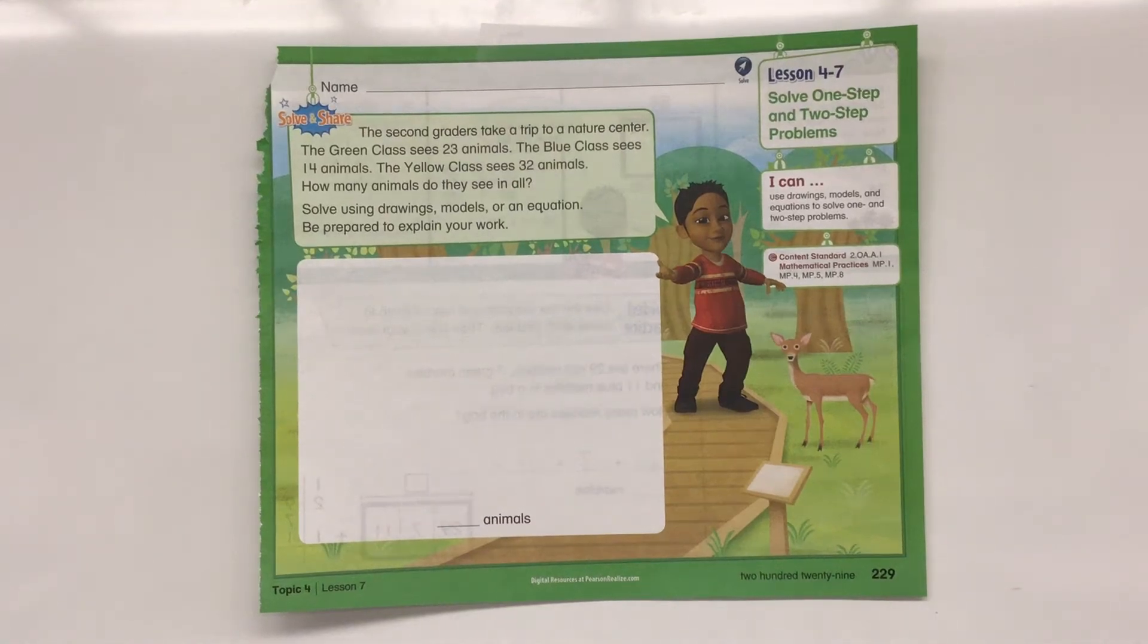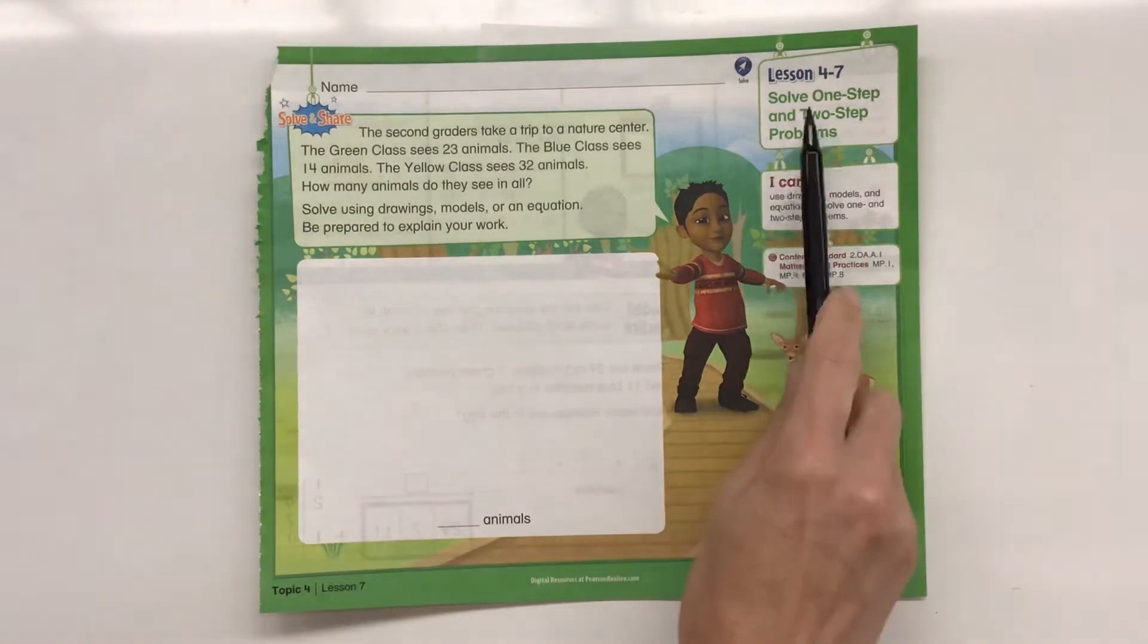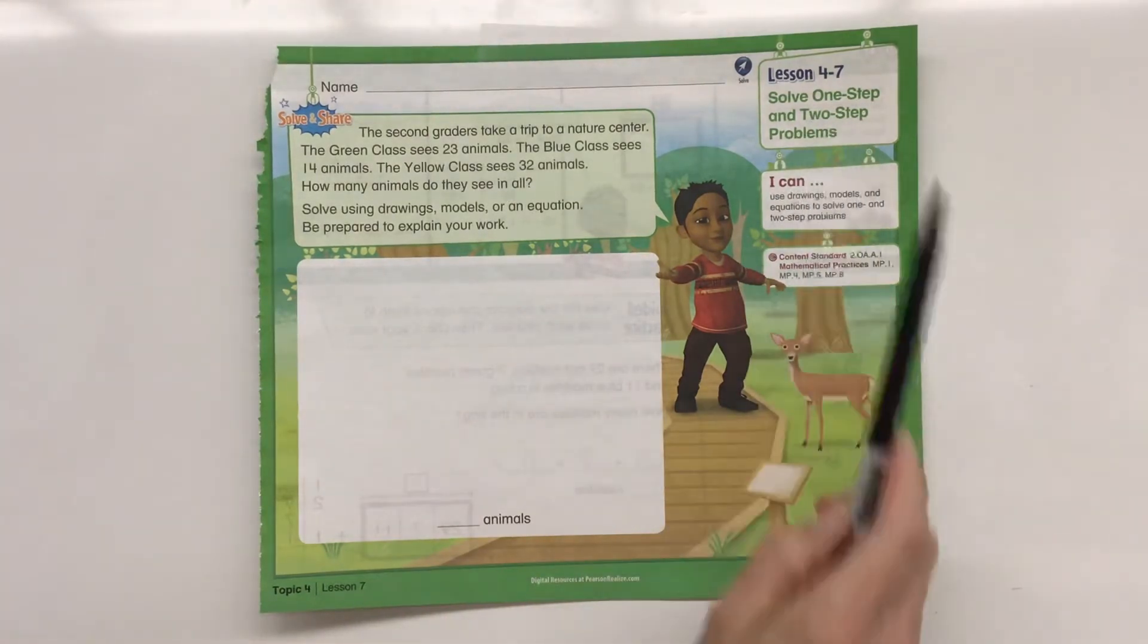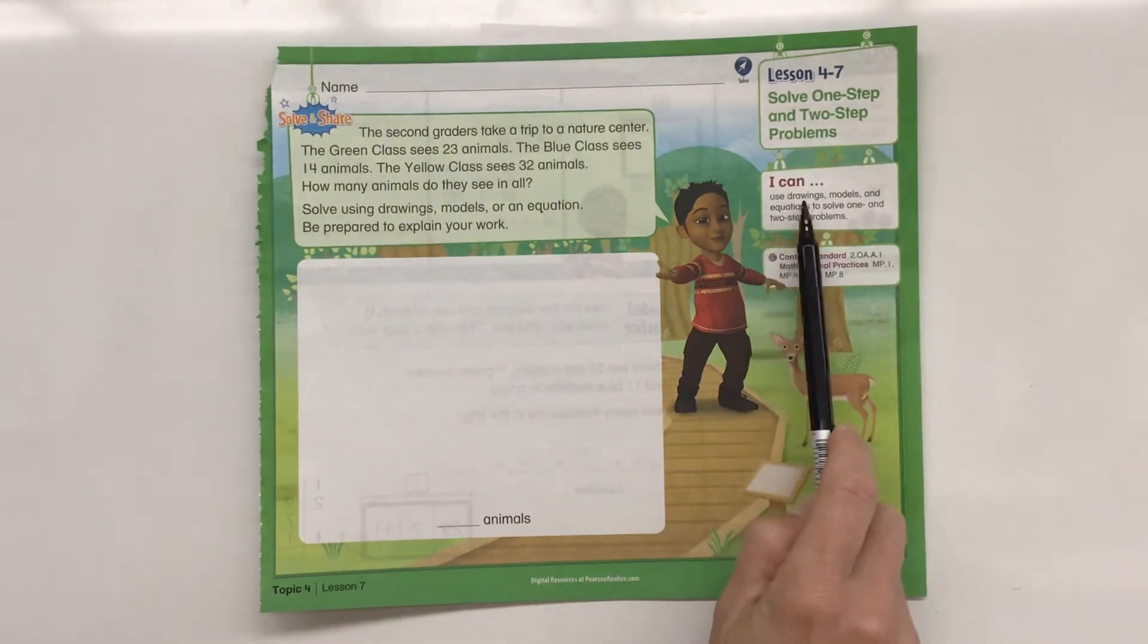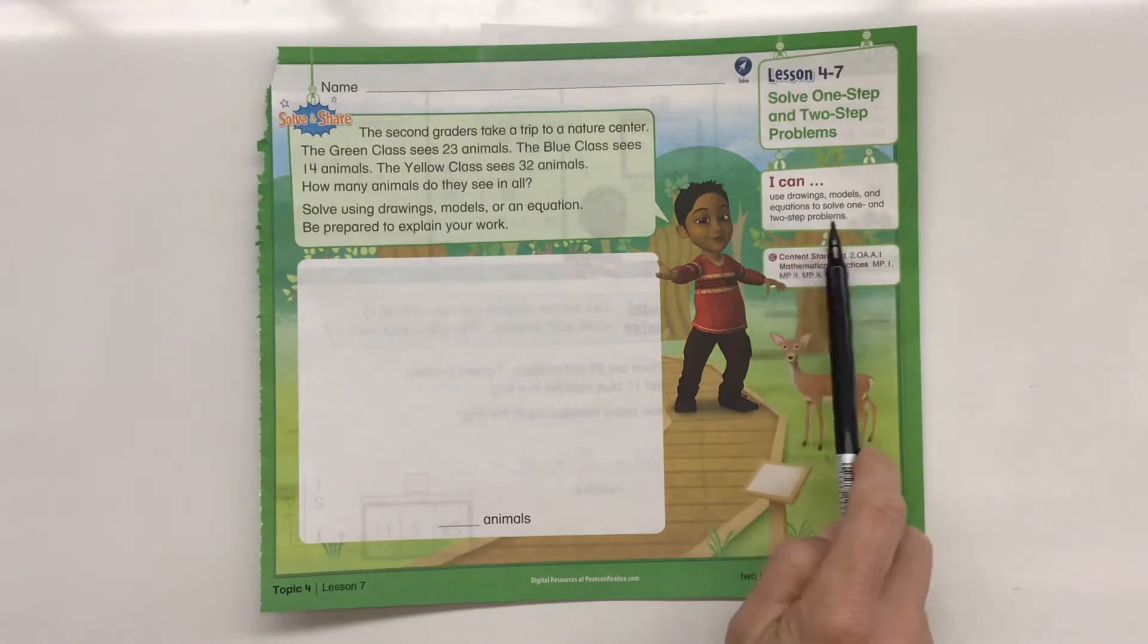All right, this is our second grade math lesson 4-7. Solve one step and two step problems. I can use drawings, models, and equations to solve one and two step problems.